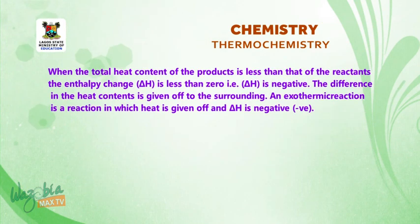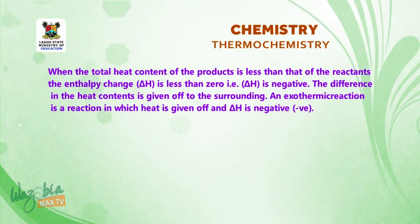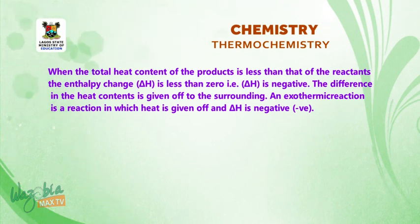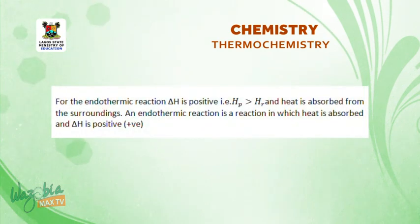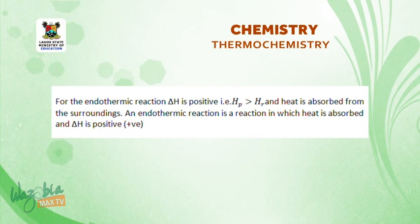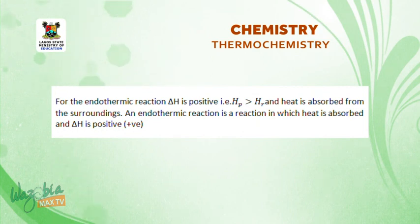When the total heat content of the product is less than that of the reactant, the enthalpy change is less than zero — that is, delta H is negative. The difference in heat content is given off to the surroundings. An exothermic reaction is a reaction in which heat is given off and delta H is negative. For the endothermic reaction, delta H is positive; that is, HP is greater than HR and heat is absorbed from the surroundings. An endothermic reaction is a reaction in which heat is absorbed and delta H is positive.